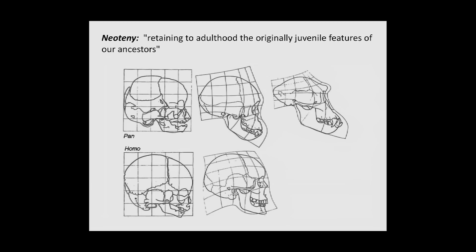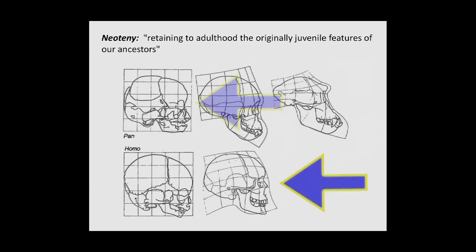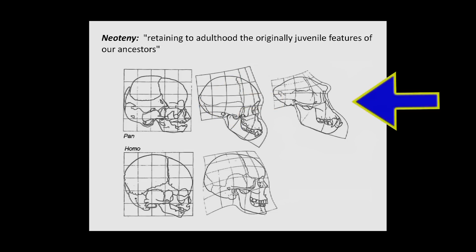And it's also reflected in the cranial features: basically you can say the skull of the adult human resembles the skull of the baby chimpanzee, while the adult chimpanzee is completely different.